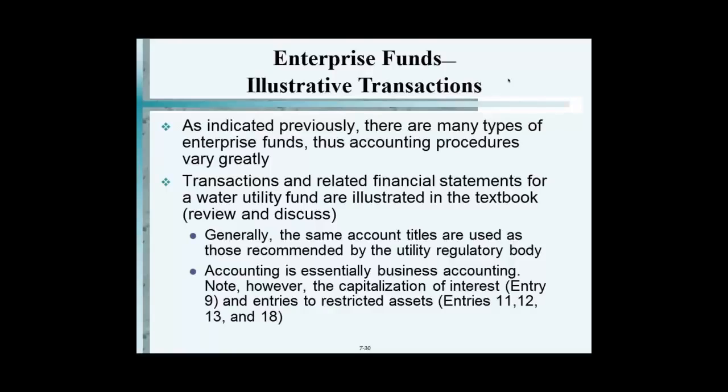Don't eliminate inter-fund activity between proprietary and governmental funds because it changes the whole picture of the enterprise fund. They would have had to buy that water from somewhere anyway. The account that it shows up in is called internal balances — that account reflects transactions occurring between enterprise funds and governmental funds.